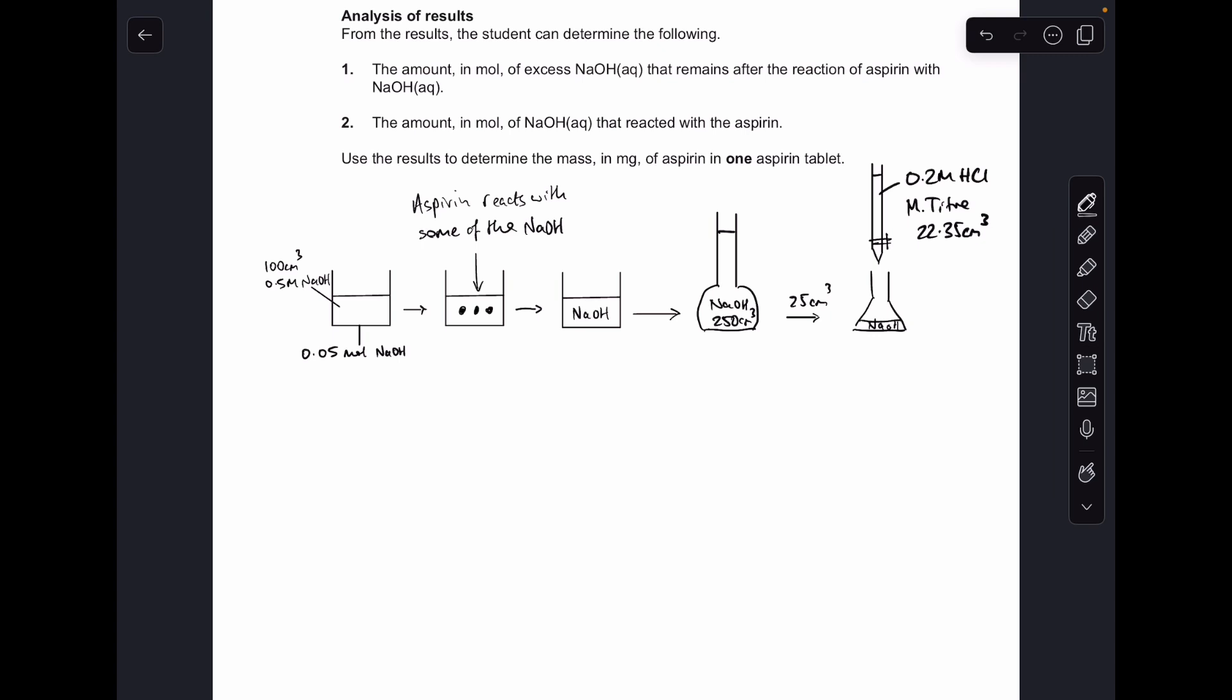So the first thing I'm going to do is work out the moles of HCl in the mean titre. Just concentration times volume in dm³: 4.47 × 10⁻³. Because of the 1:1 ratio in the titration reaction, the moles of NaOH in that 25 cm³ sample will be the same.